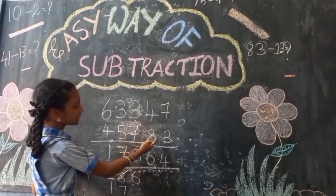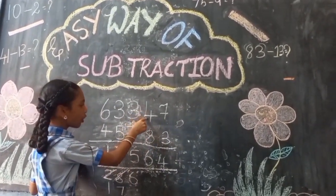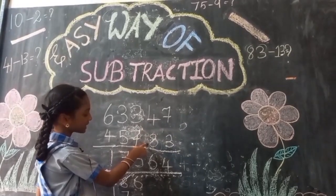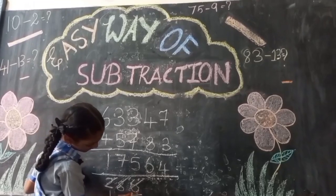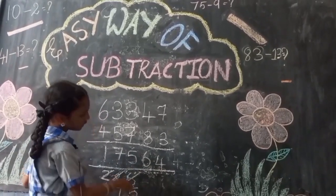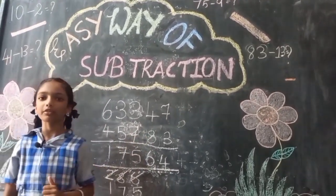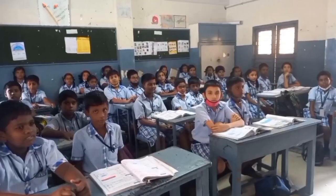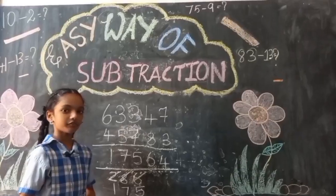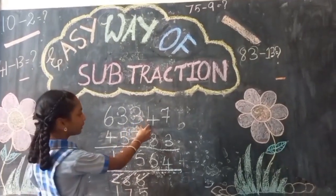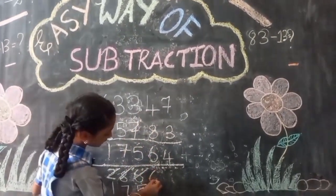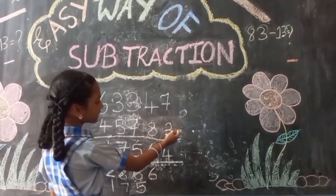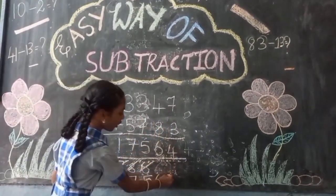Now in the next column, we have 4 minus 8. We cannot subtract 8 from 4, so reduce 1 from 6. Now, what is the complement of 8? 2. Very good. Then add 2 to 4, which is 6. Now in the next column, 7 minus 3 is 4.